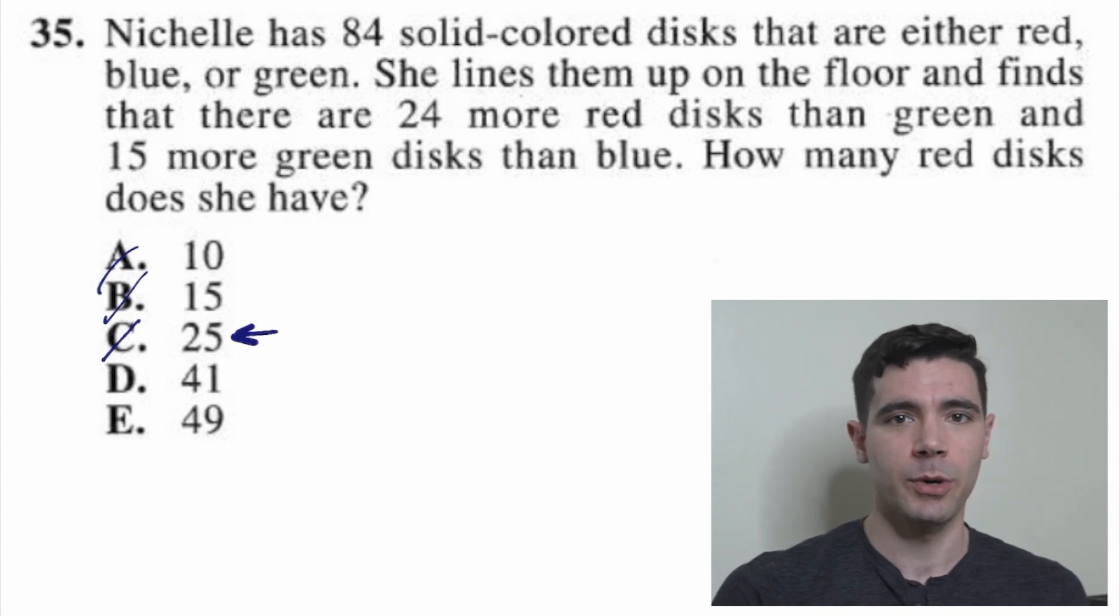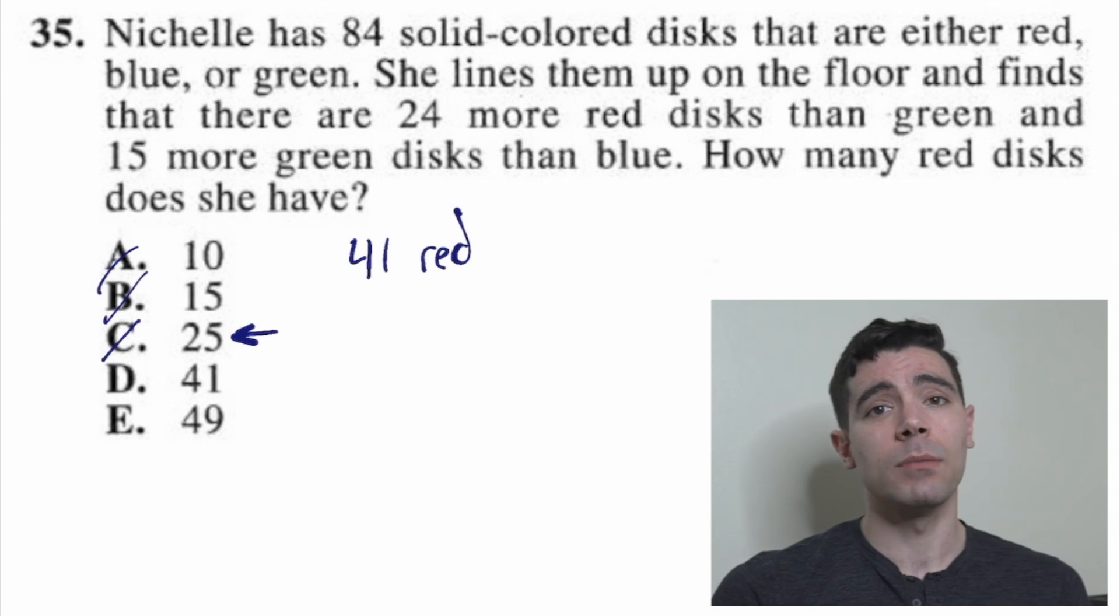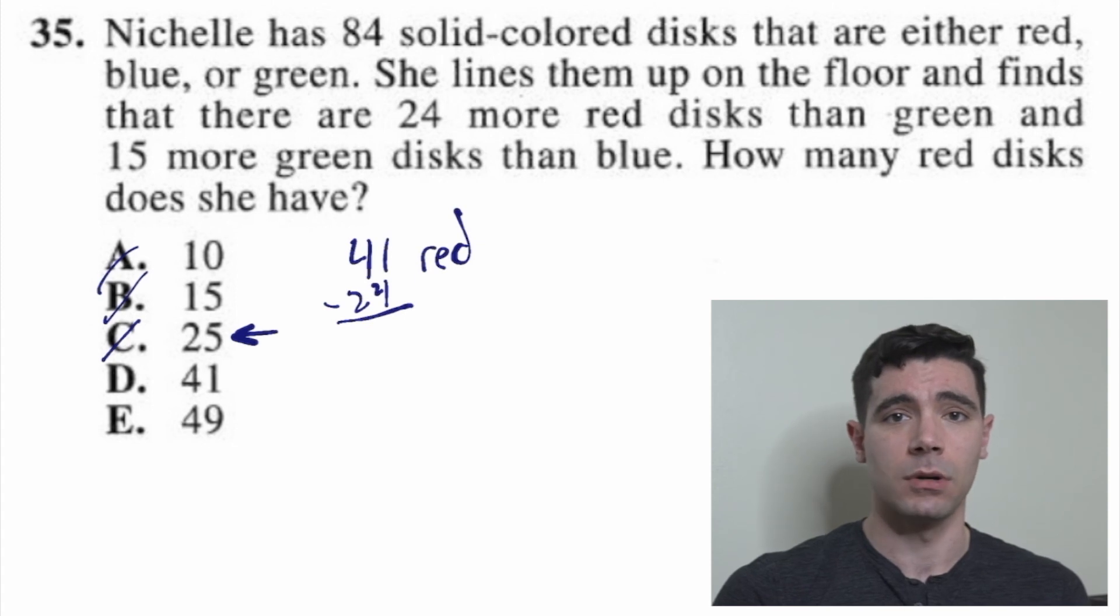Let's look at 41. If Nichelle had 41 red disks, what would we know? Well, she has 24 more red disks than green. 41 is 24 more than what? Well, that's 41 minus 24. Don't be a hero. We live in an exciting time. We use our handy-dandy calculator, it's 17. So in this case, we have 41 red disks and 17 green.